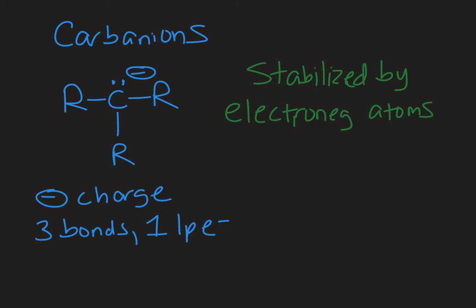The second reactive intermediate we'll look at is a carbanion. Anion means negative charge. Carbanions are specifically carbons with a negative charge. A carbanion would have three bonds and one lone pair of electrons on it.